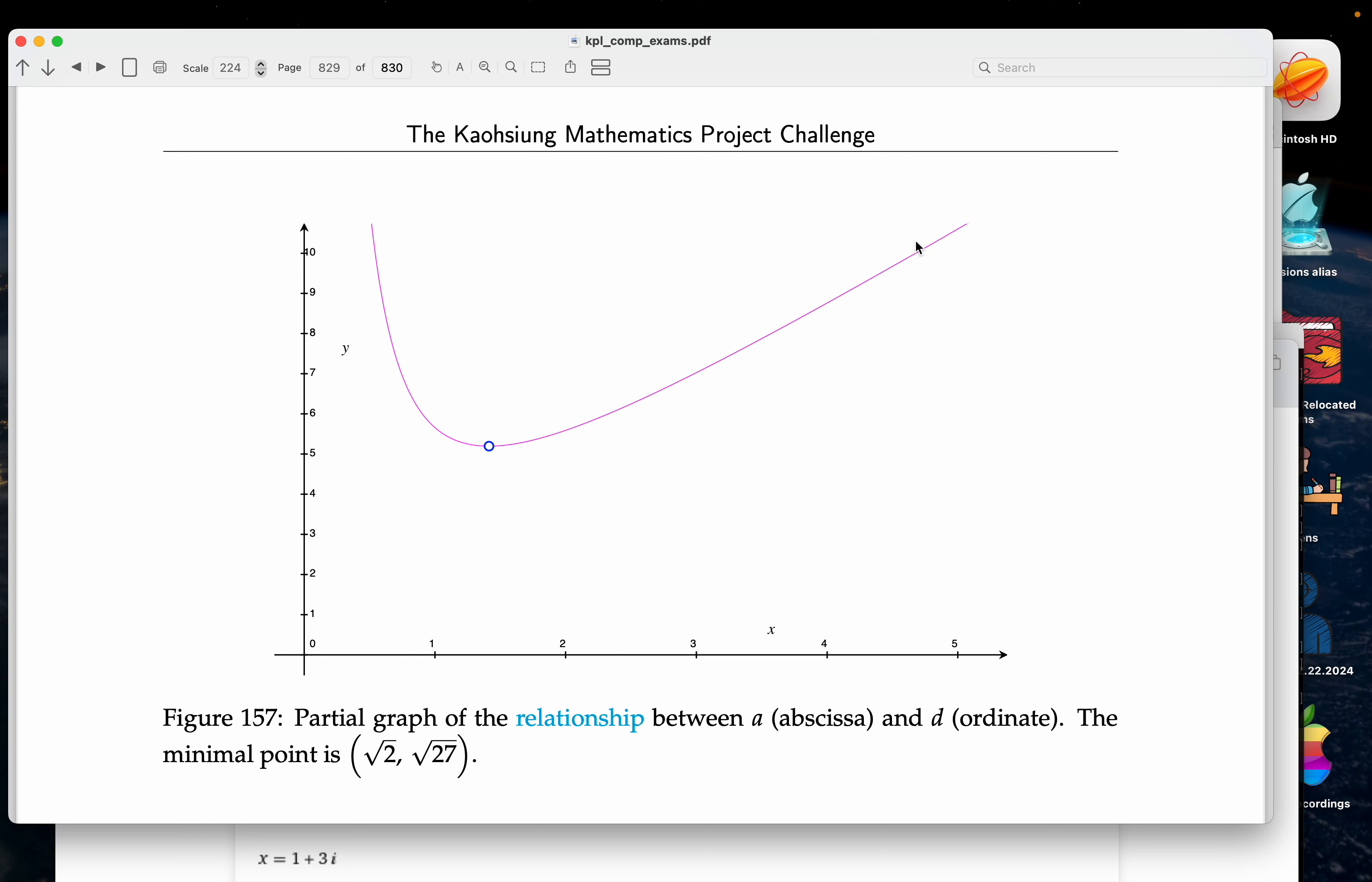Now the distances are going to increase to the left of it. So where a is equal to root 2, the magenta line is the distance. The distance starts to increase as a gets bigger than root 2.